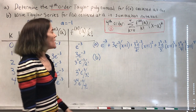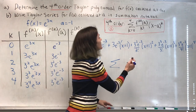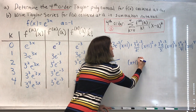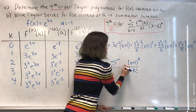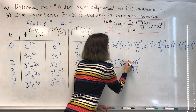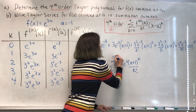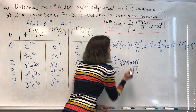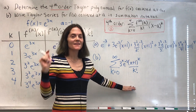For part B: we write the sum where the kth term has (x plus 1) to the k divided by k factorial, times 3 to the k, times e to the minus 3. We sum from k equals 0 to infinity. This is our Taylor series.